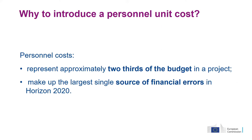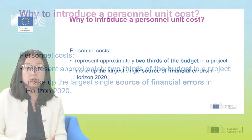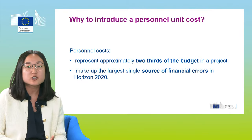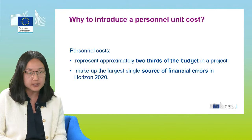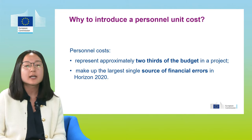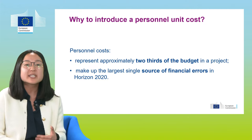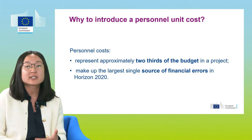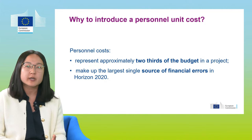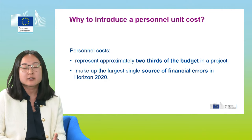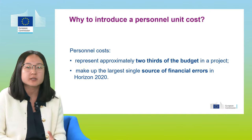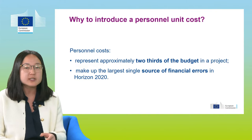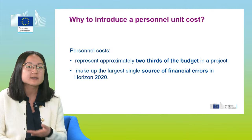Why are we tackling this cost category instead of another one? For personnel costs, as already mentioned, they are the largest single source of financial errors under Horizon 2020 — another lesson learned. At the same time, this is also the biggest chunk — two-thirds of the budget in a project. Therefore, this is the most efficient way to tackle the issue of financial errors, because we are tackling the biggest source of errors and at the same time the one with the highest amounts.